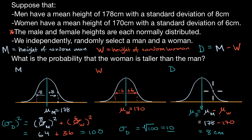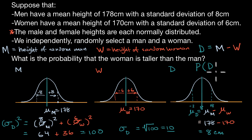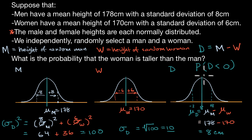So on this distribution, one standard deviation above the mean is 18 and one standard deviation below is negative two. Now we can answer the question: the probability that the woman is taller than the man. We can rewrite that as: what is the probability that the random variable D is less than zero? Because if the woman is taller than the man, D will be a negative value.